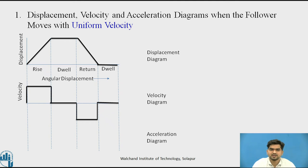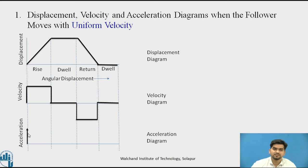Now we will see the acceleration diagram. The vertical line indicates the acceleration. If you observe, within 0 time we are getting a finite value of velocity. As the velocity reaches a finite value within 0 time, it means that the acceleration is at infinity. Similarly, at this point we are getting infinity, because within 0 time we are getting an infinite value of acceleration. Because the time required for the velocity change is 0, we are getting the infinite value of the acceleration.